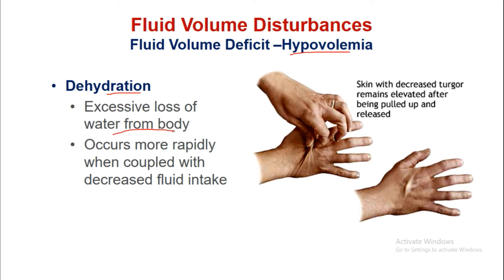Fluid volume deficit, known as hypovolemia, is importantly caused by dehydration — excessive loss of body water — which worsens when coupled with decreased fluid intake. To identify dehydration, check skin turgor: if a pulled skin fold remains elevated after being released rather than returning to normal in a fraction of a second, this indicates hypovolemia.